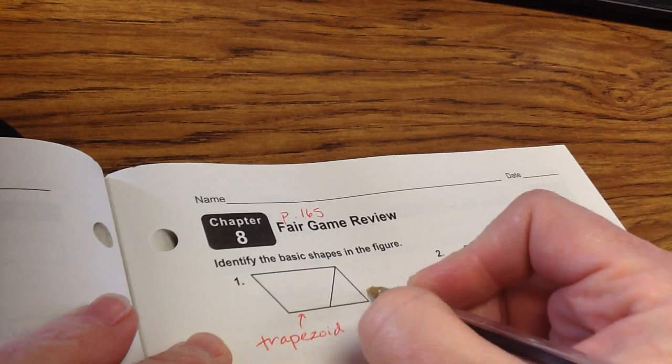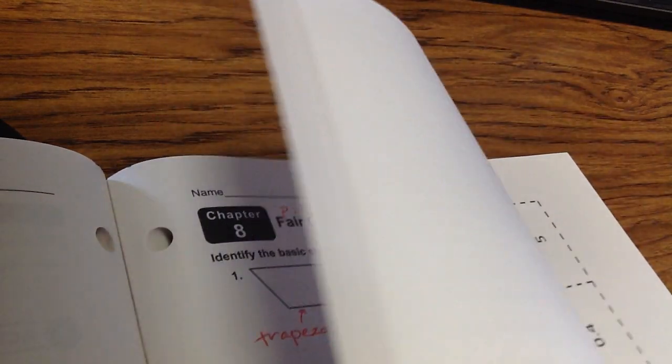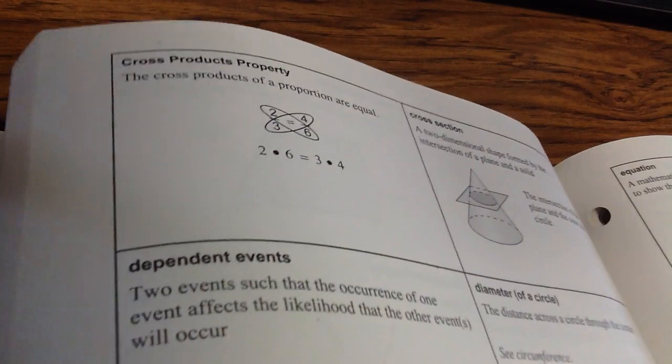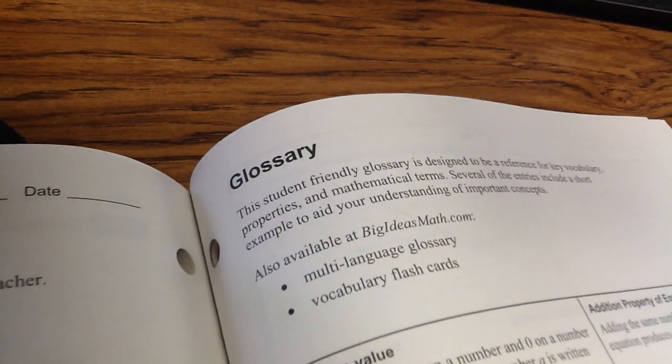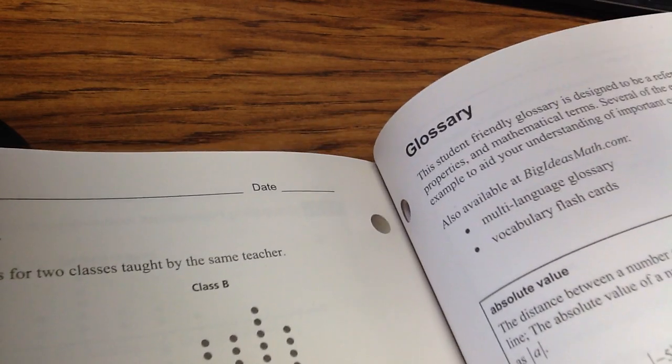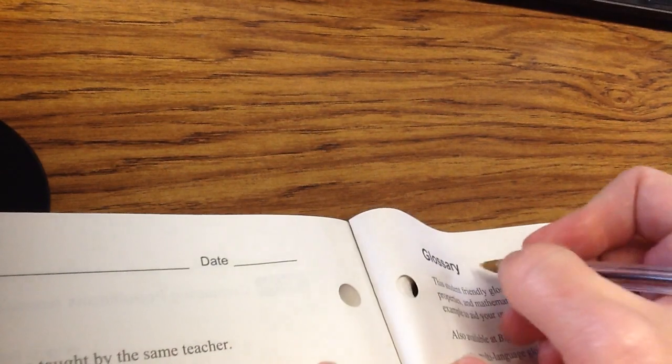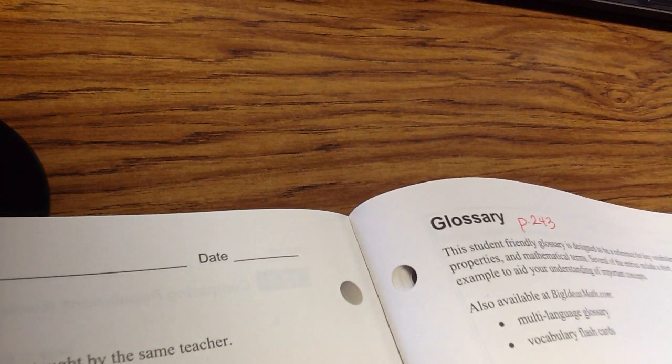Do your best with spelling. Spelling counts. If you're not sure how to spell things, we have this great resource in the back of our book called the glossary, and it's got all sorts of different words and cool little cards that you can use. So it starts on page 243. It's in the back of your workbook.